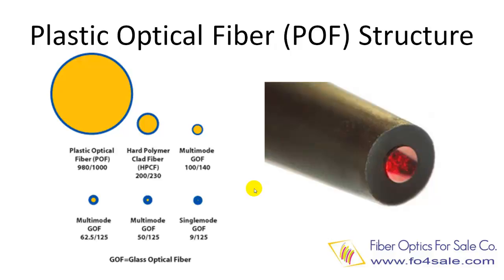The traditional PMMA fibers are commonly used for low speed, short distance — up to 100 meters — applications in digital home appliances, home networks, industrial networks, and car networks. The high-performance perfluorinated polymer fibers are commonly used for much higher speed applications, such as data center wiring and building LAN wiring.